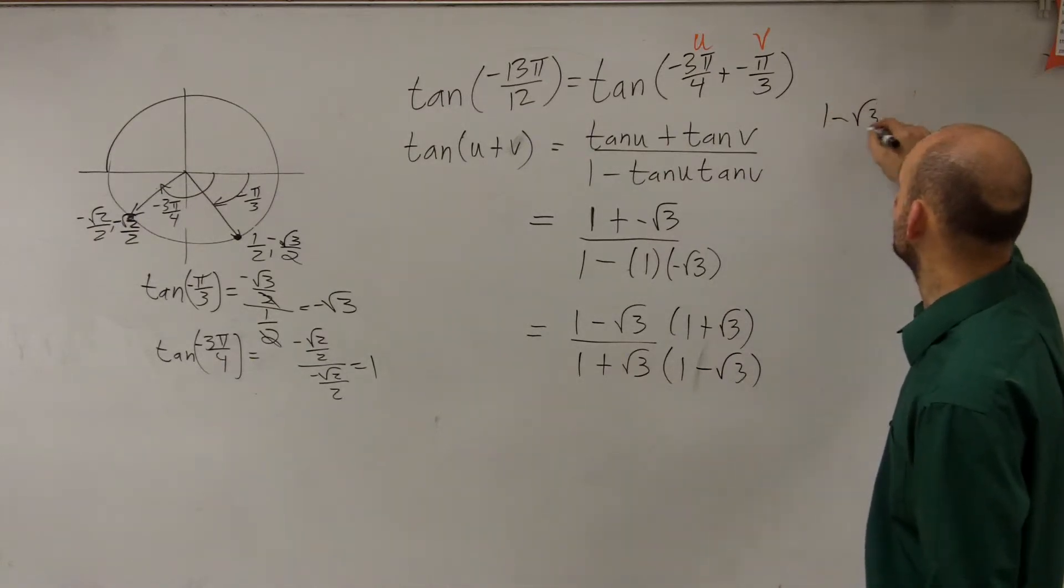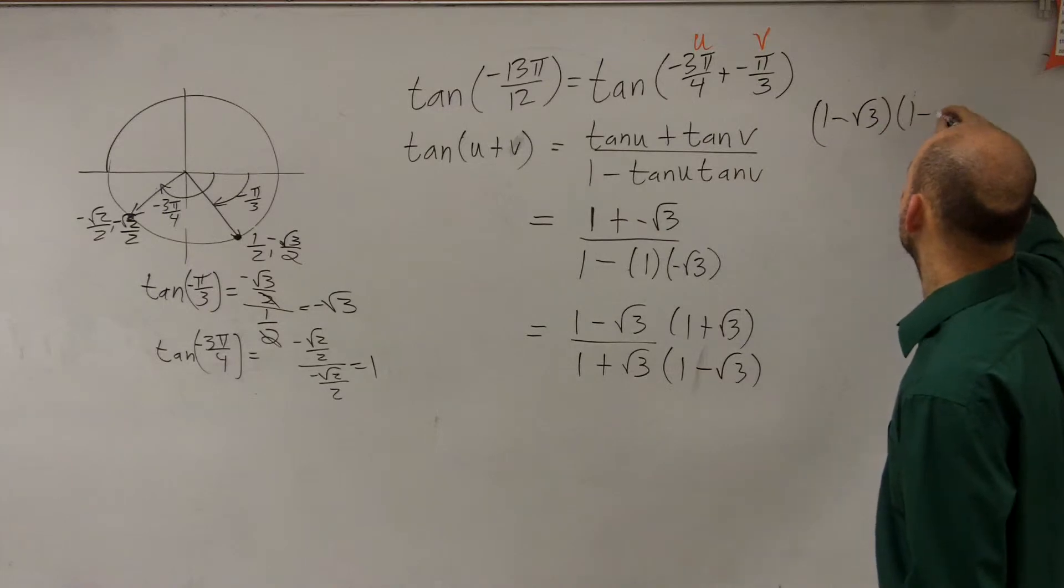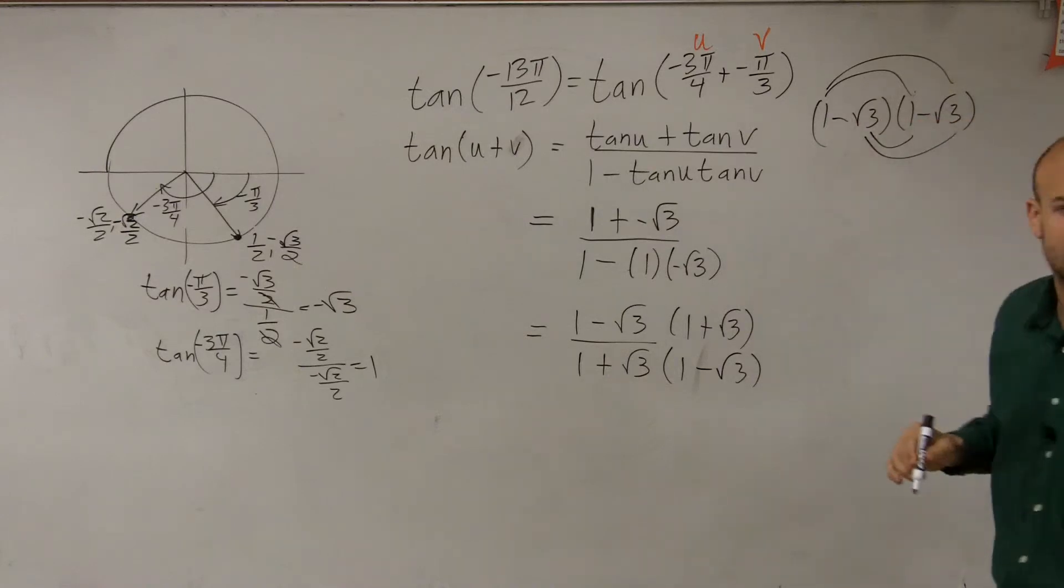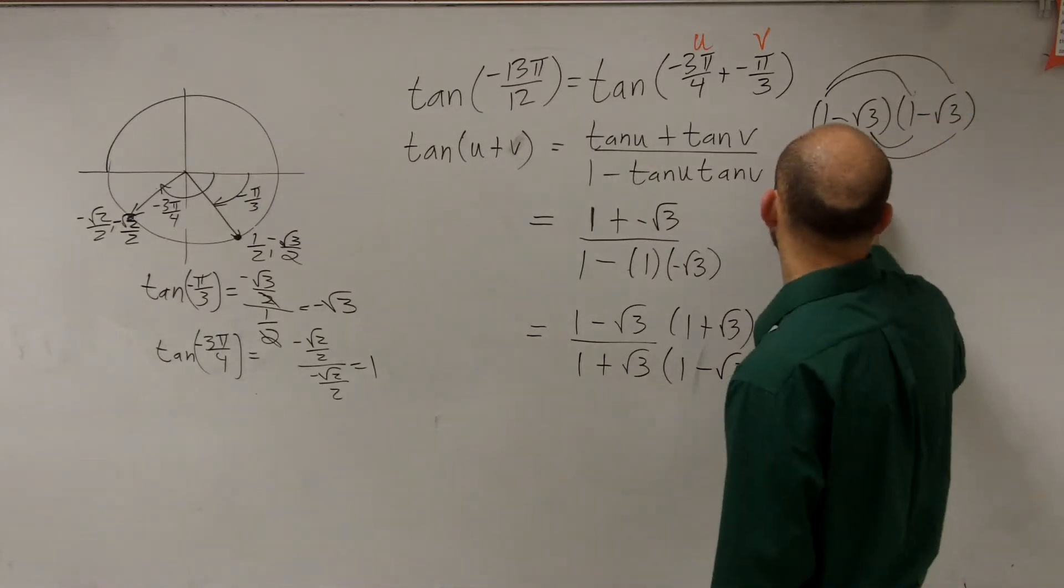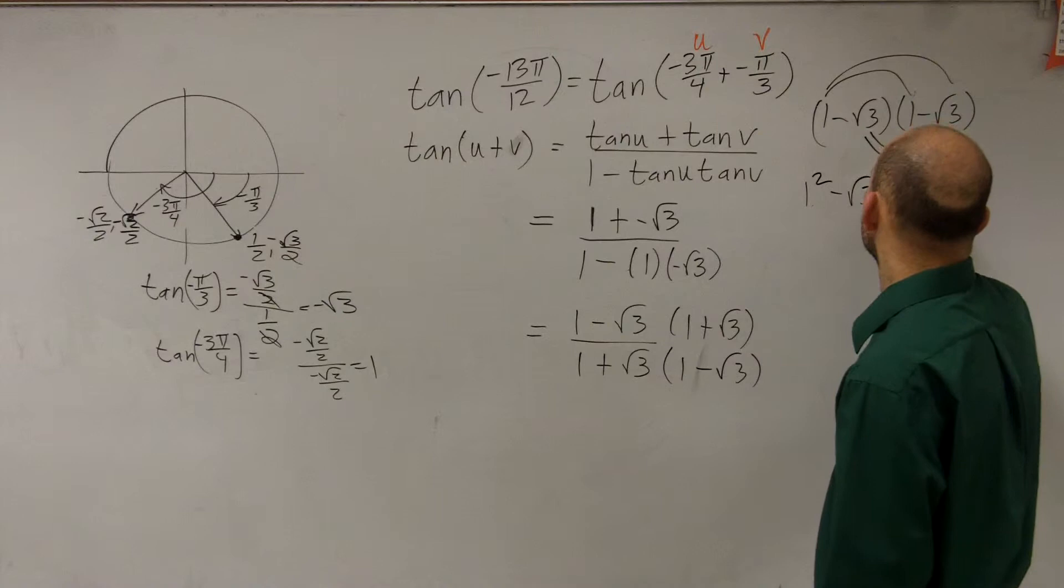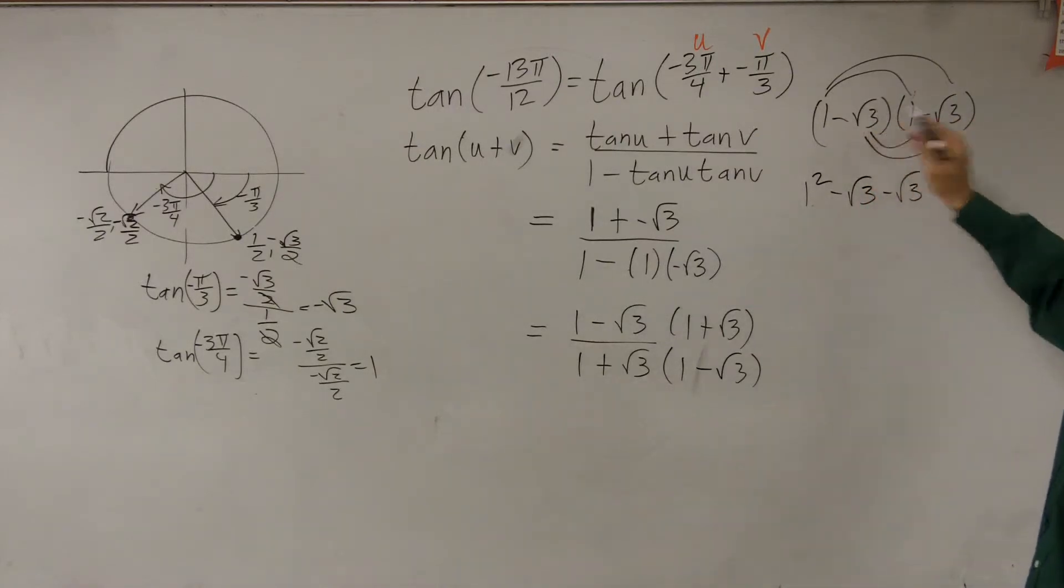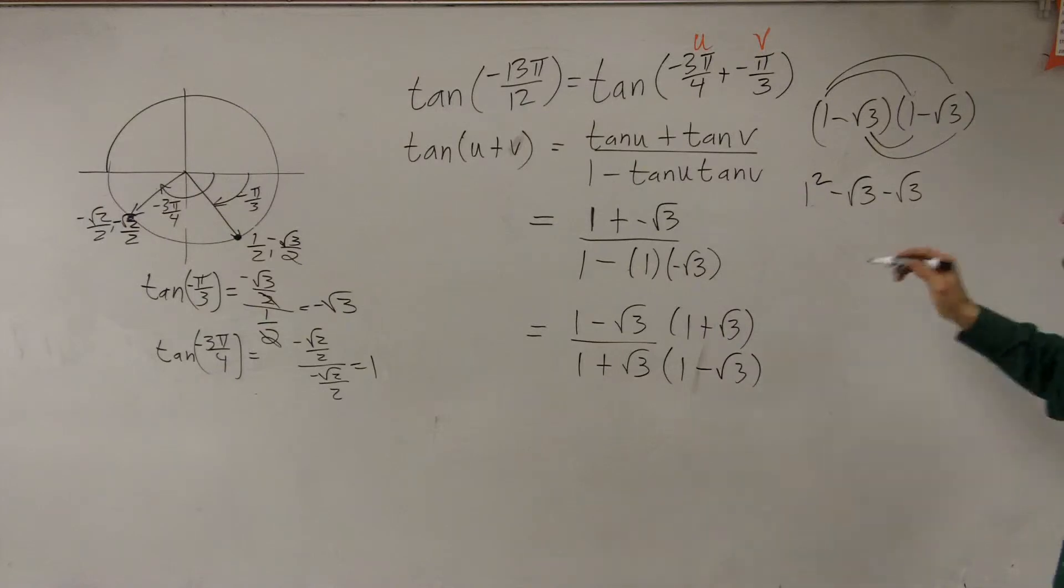Let's go through FOIL. When you do FOIL - first, outer, inner, last - this problem gives you 1 squared minus square root of 3 minus square root of 3, and negative square root of 3 times negative square root of 3 is positive 3.